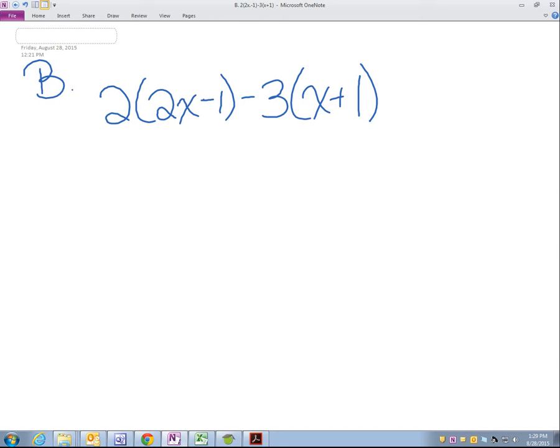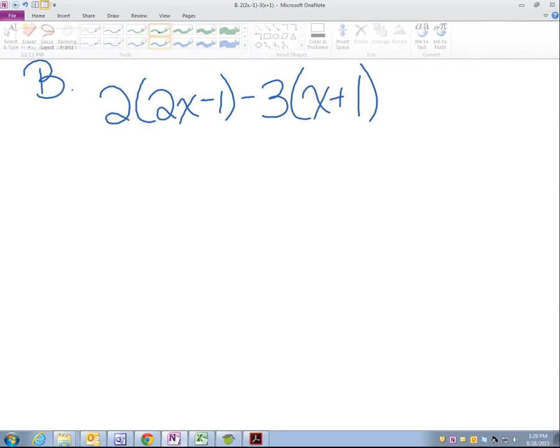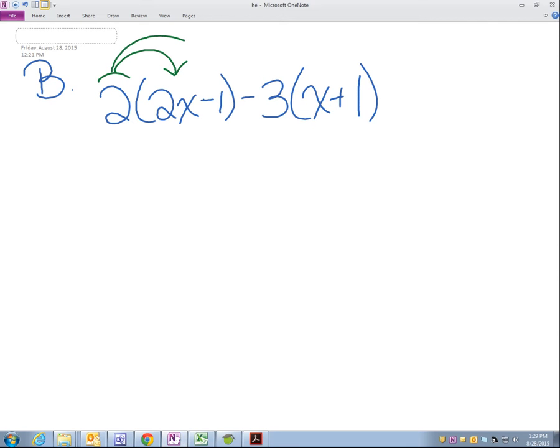So the first thing we need to do is distribute this two to the 2X and distribute this two to the negative one, or making sure we keep that sign there. So we have two times 2X. Do you need me to rewrite two times 2X? No. Two times 2X is 4X, minus 2 times 1, which is 2.